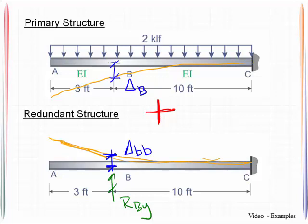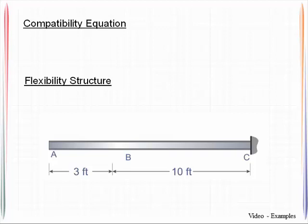This delta B can actually be rewritten, though, in terms of the redundant force, RBY, multiplied by the flexibility coefficient. Whereas, you may recall, flexibility coefficient is the displacement at B due to a unit load at B. All right, so we are superimposing those. And what this tells us, then, is we know that in the real structure, when I superimpose the primary structure, so there's the displacement at B plus the redundant structure, it had better give me what was in the original structure. And in the original structure, the displacement was zero.